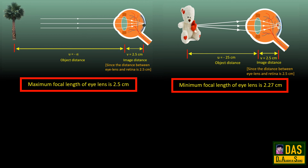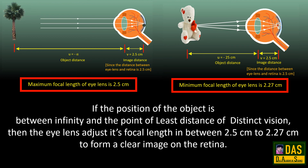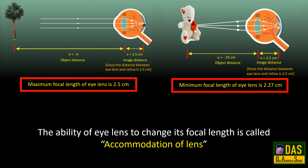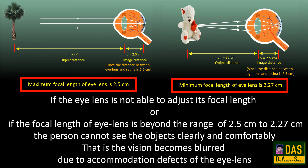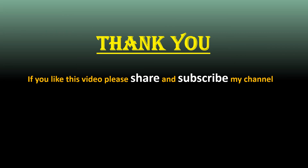So, when the object is at infinity, the maximum focal length of the eye lens is 2.5 cm, and when the object is at the least distance of distinct vision, the minimum focal length is 2.27 cm. For objects between infinity and the least distance of distinct vision, the eye lens adjusts its focal length between 2.5 cm and 2.27 cm to form a clear image on the retina. This ability of the eye lens to change its focal length is called accommodation of the lens. If the eye lens cannot adjust its focal length within this range, the vision becomes blurred due to accommodation defects. Thank you — if you like this video, please share and subscribe to DAS Academy of Science.